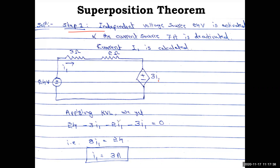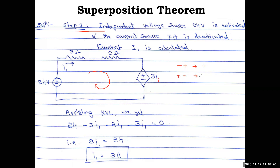Applying KVL — there are two conventions in network theory and different authors use different ones. The method used here is to traverse clockwise. When going from minus to plus, take it as positive. Another convention uses plus-to-minus as minus. Choose one and stick with it.